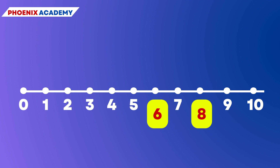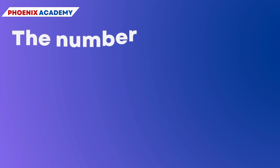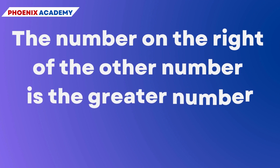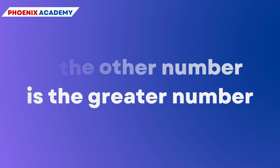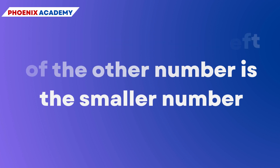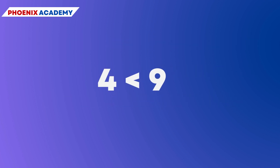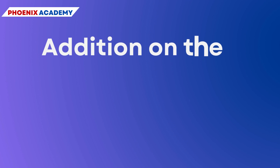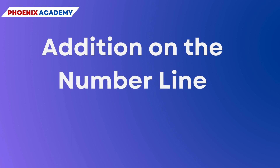Similarly, 8 lies to the right of 6 and 8 is greater than 6. These observations help us say that out of any two whole numbers, the number on the right is the greater number. We can also say that a whole number on the left is the smaller number. For example, 4 is less than 9 because 4 is on the left of 9.